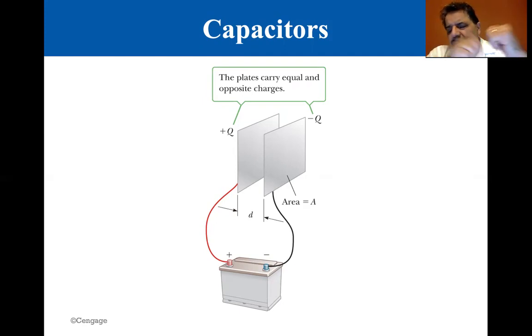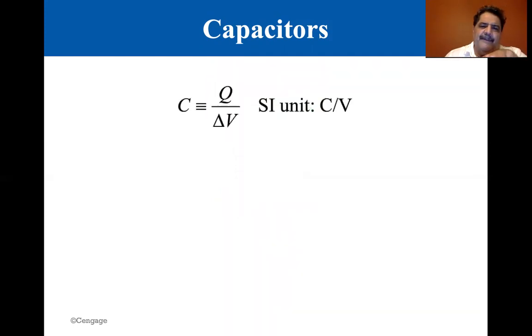These become very important when we start talking about capacitors in series and capacitors in parallel. We'll understand what that means when we get to it. The Q is the charge on the plates—one side has plus Q where the positive is and the other has minus Q where the negative is.